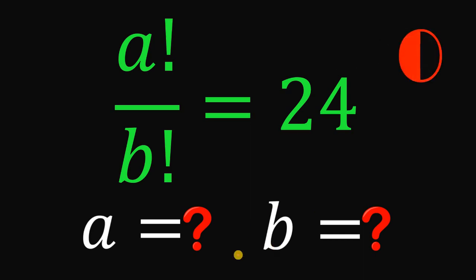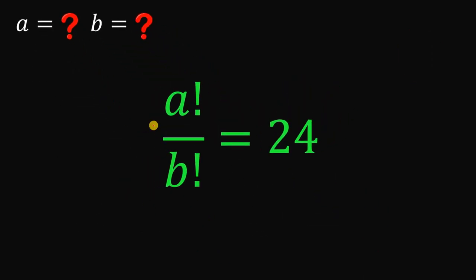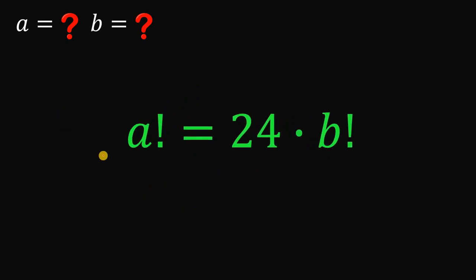Now let's answer this question together. Given the equation a factorial over b factorial equals 24, our goal is to solve for the values of a and b. What we're going to do here is multiply both sides by b factorial. This will give us a factorial equals 24 times b factorial.